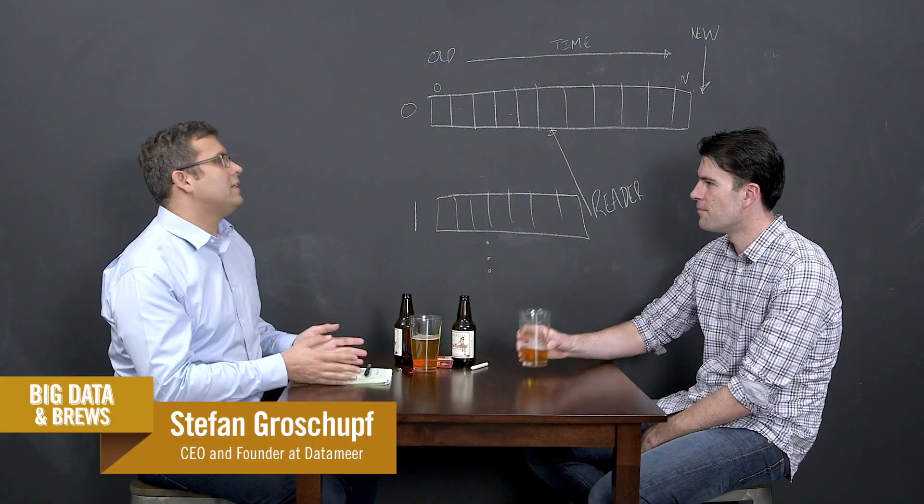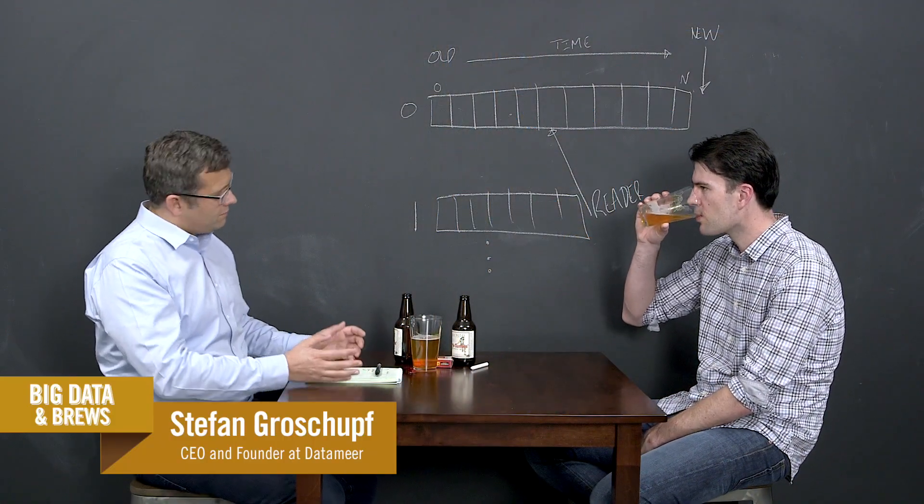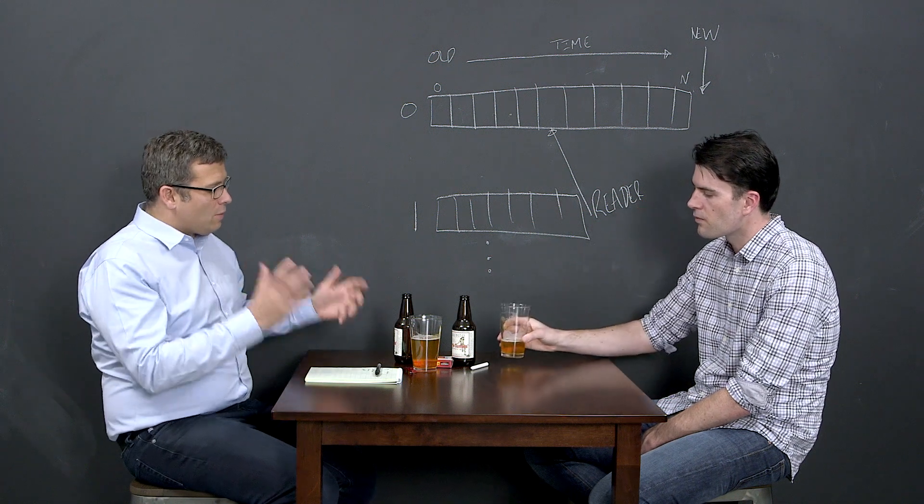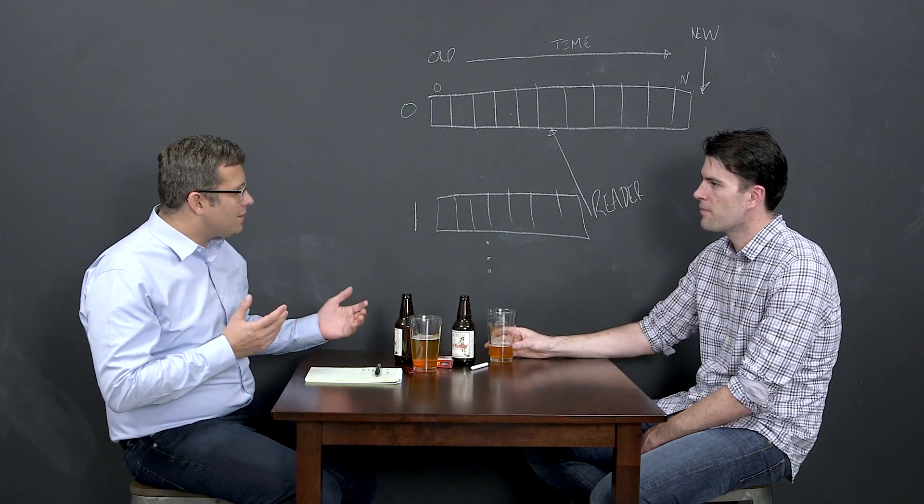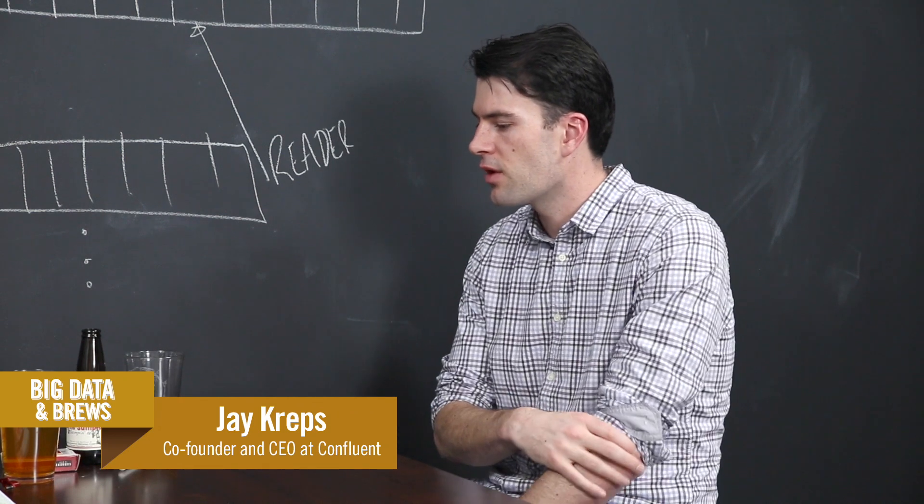So tell me a little bit, what are the use cases people are solving and what's the smallest Zookeeper and the biggest and what are the user patterns around that?